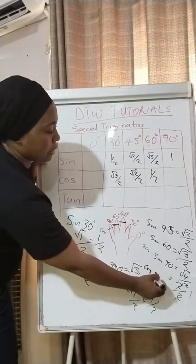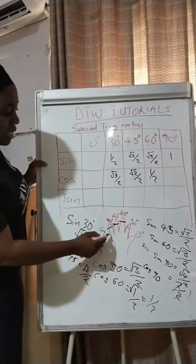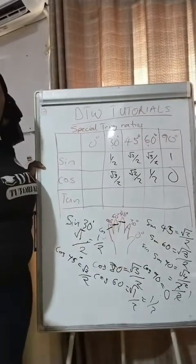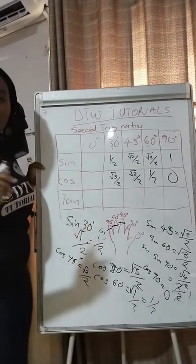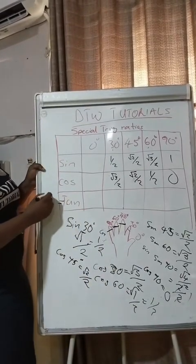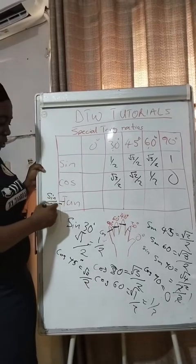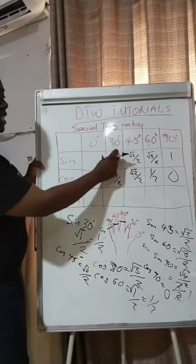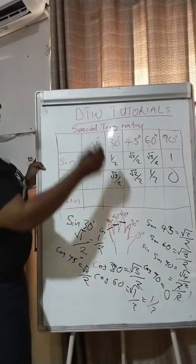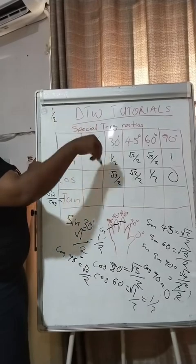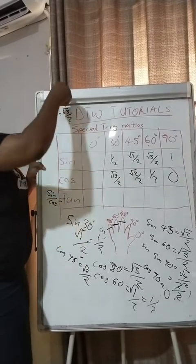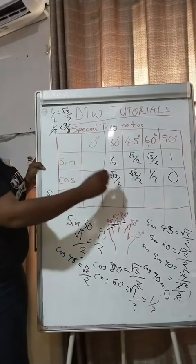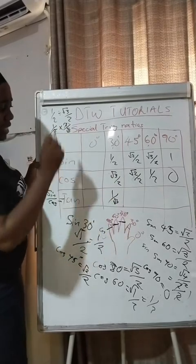For cos 90, fold the little finger — there are no fingers to the left, so cos 90 = 0. Now for tangent: the formula is tan = sin / cos. To get tan 30, divide sin 30 by cos 30: (1/2) ÷ (√3/2) = 1/2 × 2/√3 = 1/√3. So tan 30 = 1/√3.